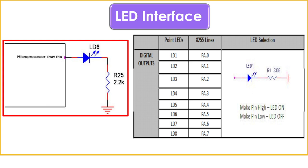From a layman's perspective, a traffic light is simply an LED which emits light. But internally, to glow or switch off an LED we need basic knowledge about it. An LED has two terminals: the anode and the cathode. The anode terminal needs to be connected to the positive supply and the cathode to the ground, which is negative. Only then will the LED glow.